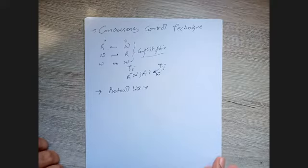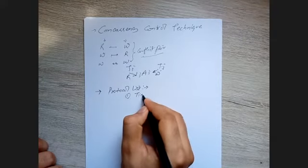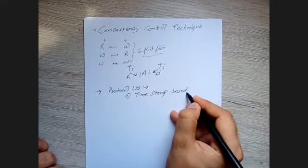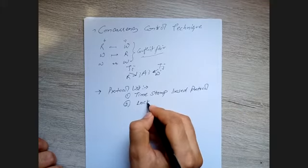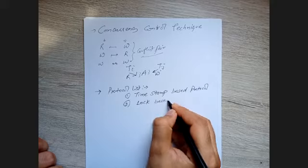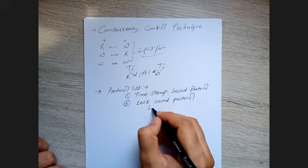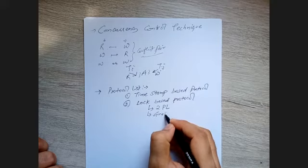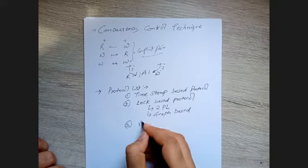The protocol list we use to manage conflicts arising from simultaneous execution includes: first, the timestamp-based protocol; second, the lock-based protocol — where we'll cover two-phase locking (2PL) and the graph approach; and third, the validation-based protocol.